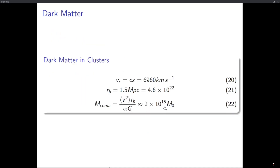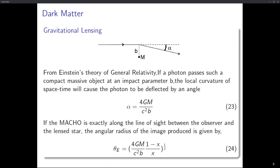Moving on to the next topic: gravitational lensing. Gravitational lensing is one way to detect dark matter or to understand its presence in our universe by looking at its gravitational effects on surrounding objects, since dark matter does not emit or absorb any electromagnetic waves. So the only way to know dark matter is present is to look at its gravitational effects on nearby objects within a certain radius.